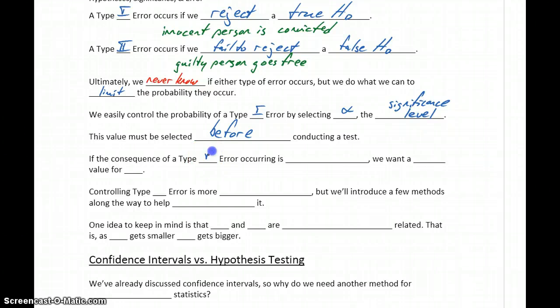If the consequence of a Type I error occurring is something severe, then we want to choose a smaller value for alpha. Our typical value is to let alpha be 0.05, so that's about 5%. If it's a severe situation, we might want to go with something smaller than that. If it's a less severe situation, we could go with a larger value. Controlling Type I error is as easy as just selecting that value for alpha.